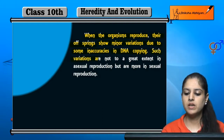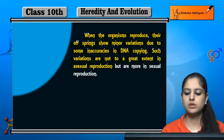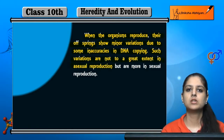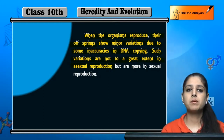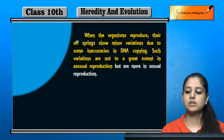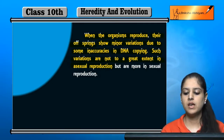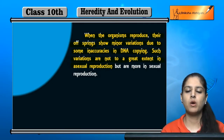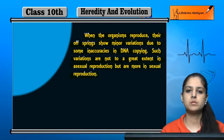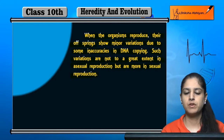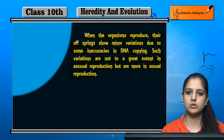Such variations are not to a great extent in asexual reproduction. Is type ki reproduction ke andar jo variations hain, woh zyada nahi hote hain. Generally, asexual reproduction mein jo amount of variation hai, woh bohot kam hote hain. Lekin jo sexual reproduction hai, uspe jo variations ka amount hai, zyada hote hain.